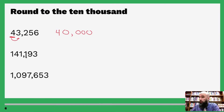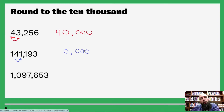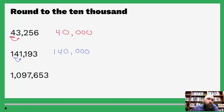Let's do it again — ones, tens, hundreds, thousands, ten-thousands. Go to the right — four or below, let it go. So one, two, three, four zeros. Since one is four or below, we let that digit go, and then one is just kind of hanging out. One hundred and forty thousand.